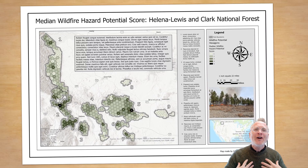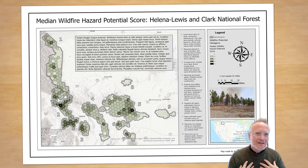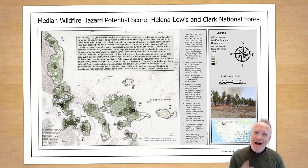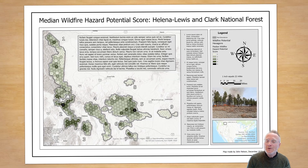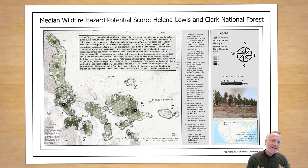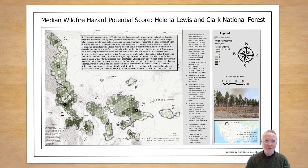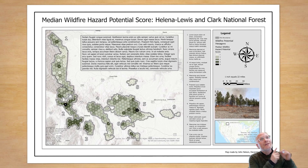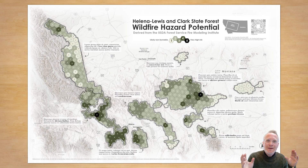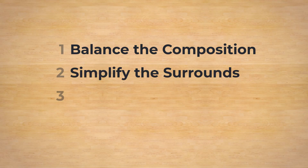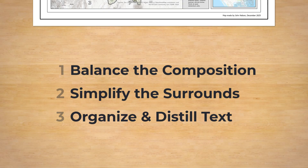There's no one right way to make a map, and far be it from me to be captain bossy pants about how you make a layout, but I'd like to offer you a resource for things to consider when arranging your layout. We're going to turn this into this. It breaks down into three main bits of advice: a balanced composition, simplified surrounds, and organized and distilled text.